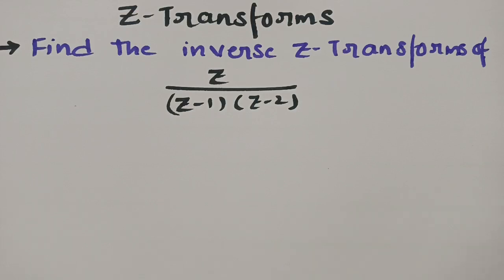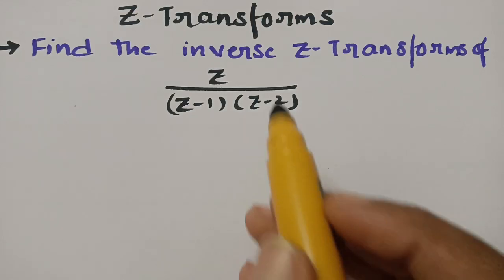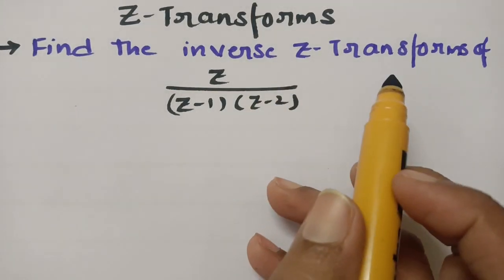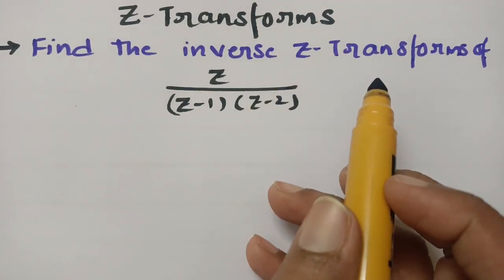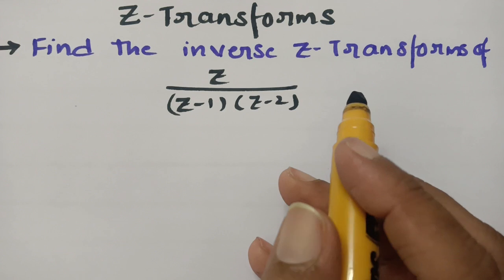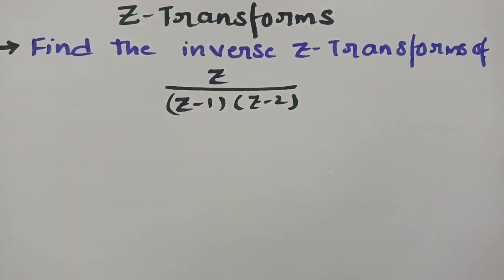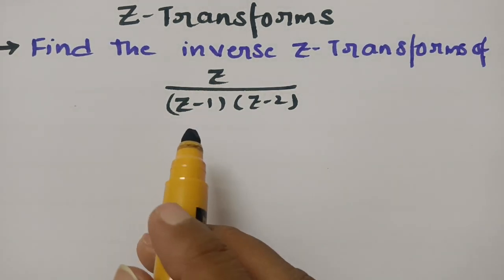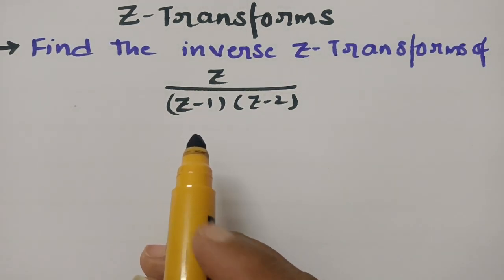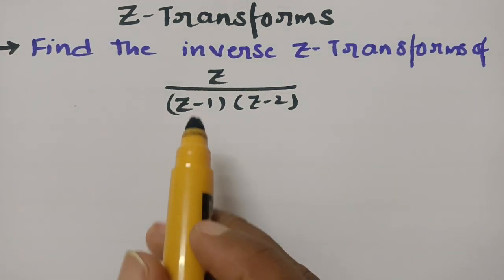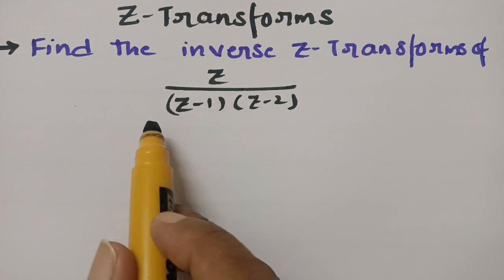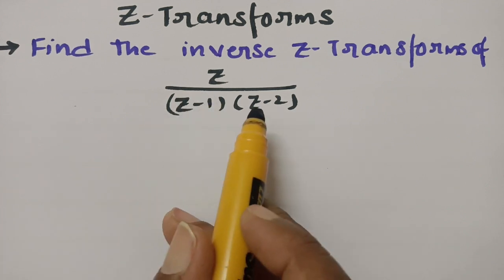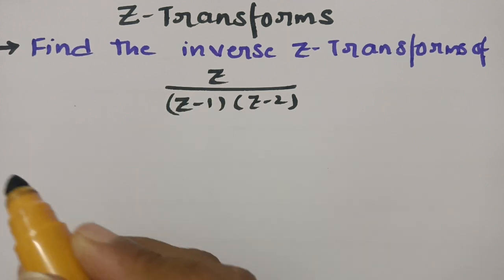In today's video, I am going to explain how to find out the inverse Z transform using partial fractions. The question is given: we have to find the inverse Z transform of Z by Z minus 1 into Z minus 2.